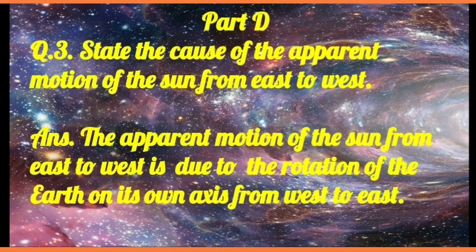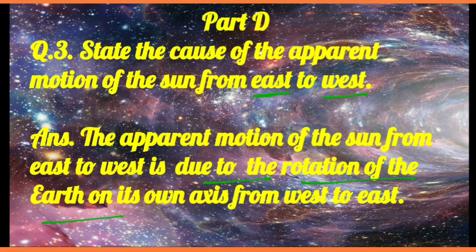Question number 3: state the cause of the apparent motion of the sun from east to west. This is due to the rotation of the Earth on its own axis from west to east. The Earth rotates on its own axis from west to east, and this is why we see the Sun appear to move east to west.